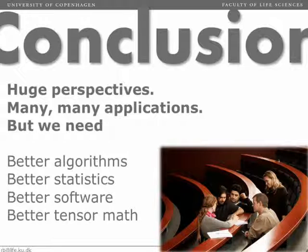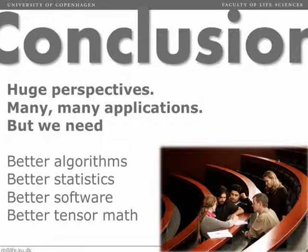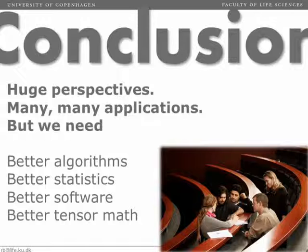Something like rank, for example, should be trivial, but it's not very well understood for three-way and higher-way arrays. So there's still a lot of research needed to make tensor and multi-way models a mature area.